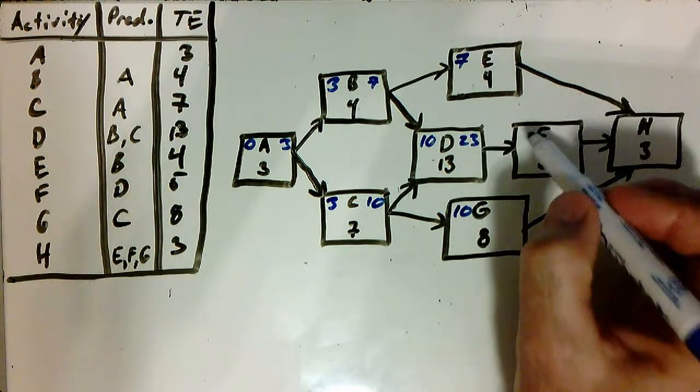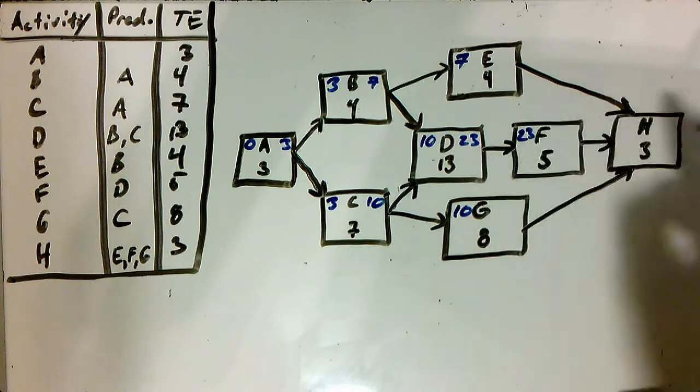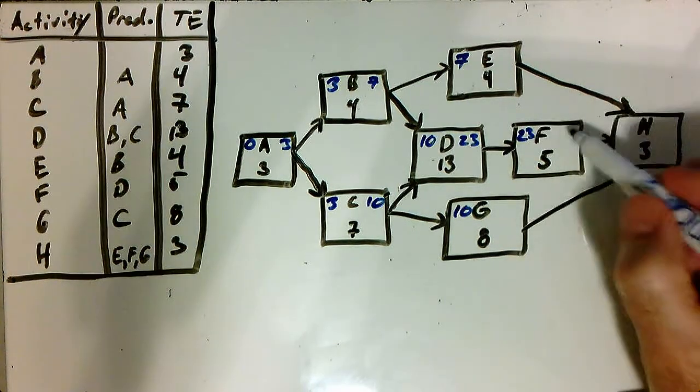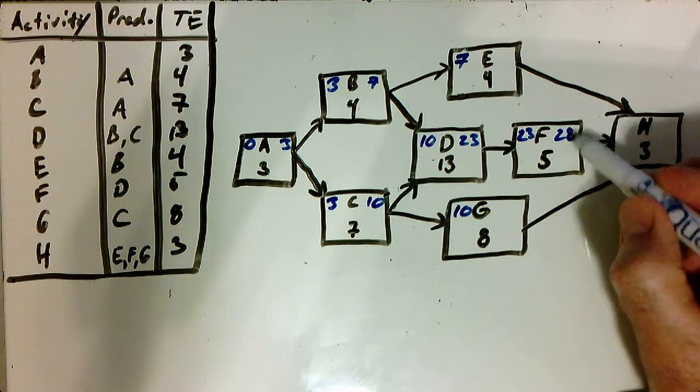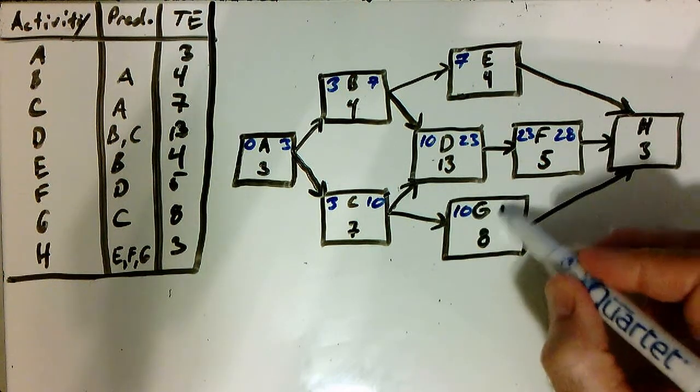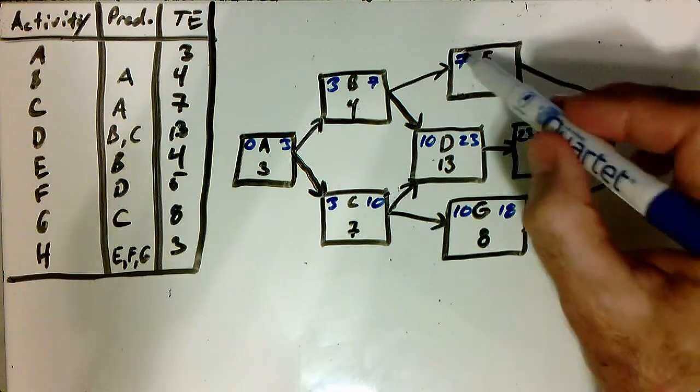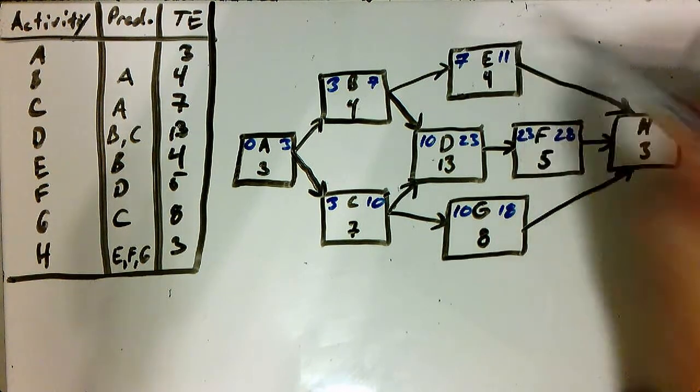All right. Now we can move the twenty-three on to F. Twenty-three plus five, twenty-eight. Ten plus eight, eighteen. Seven plus four, eleven.